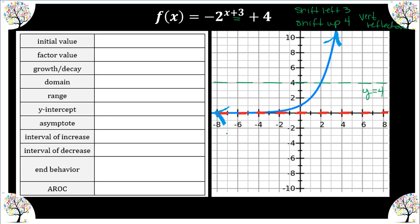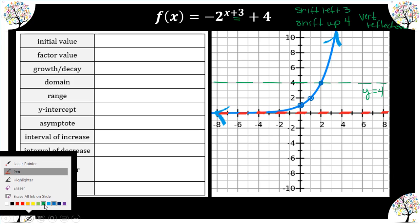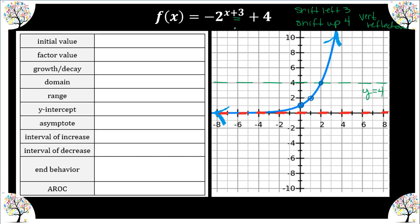I'm going to pick out a few nice ordered pairs and then shift left, then up, and then reflect. So I'm going to shift my y-intercept left 1-2-3, then up 1-2-3-4, and then it's going to be reflected.